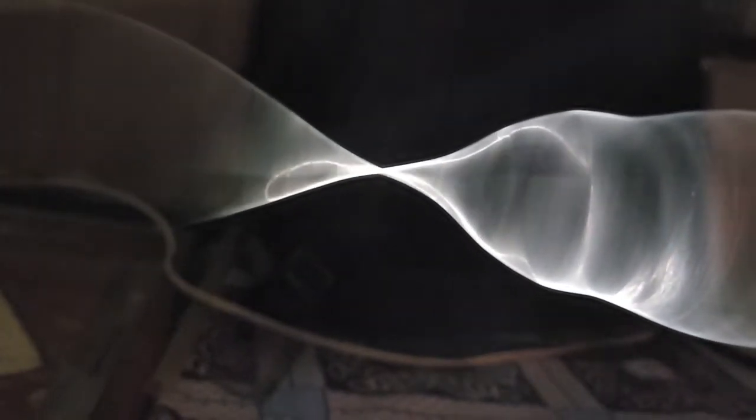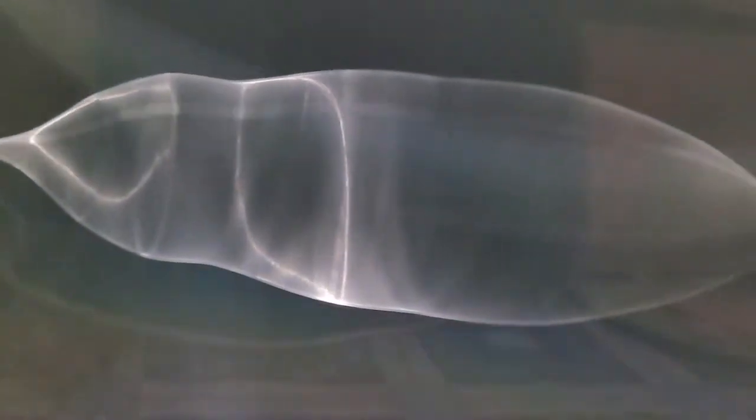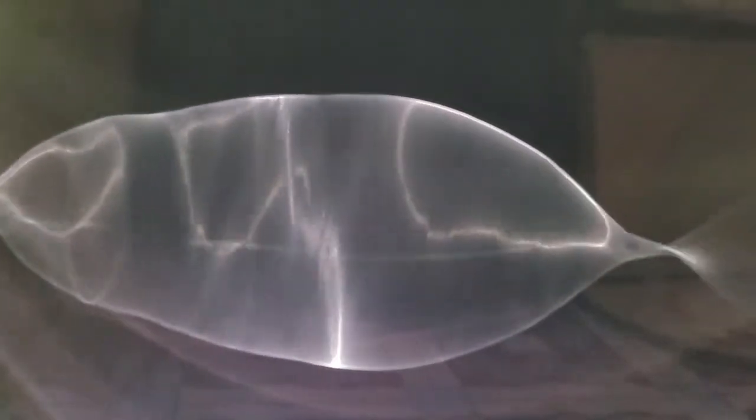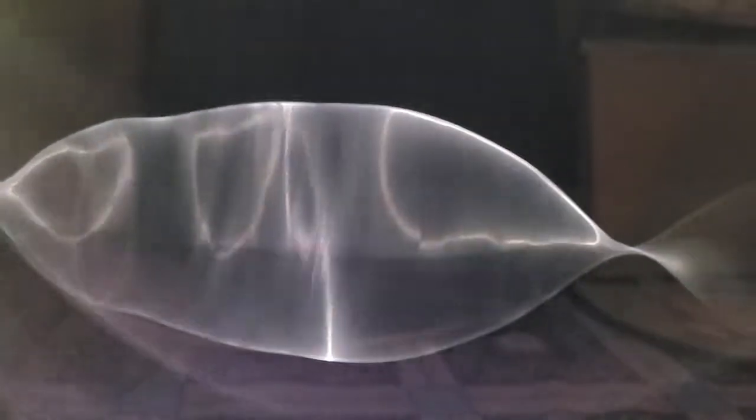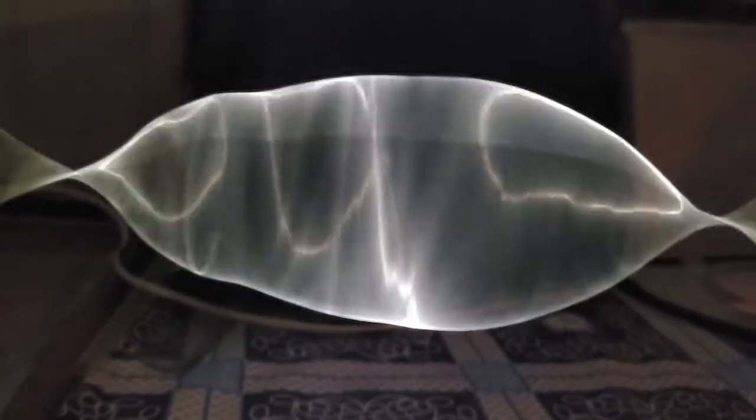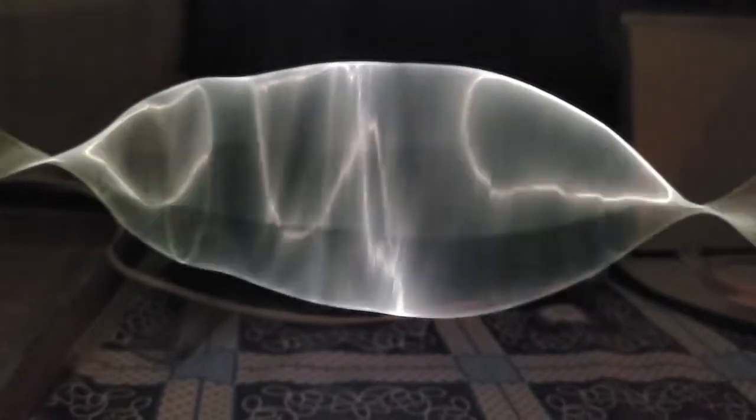And see that as the voltage is fluctuating, the nodes also. This is a node, this is the antinode. I've changed, I've placed now closer, this motor.